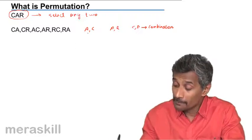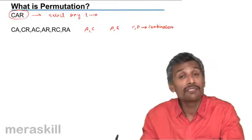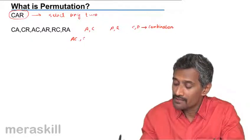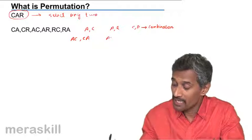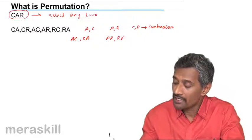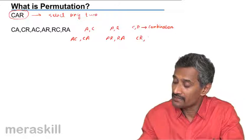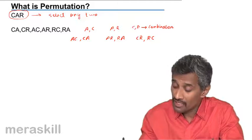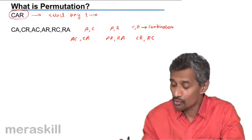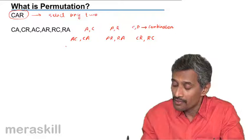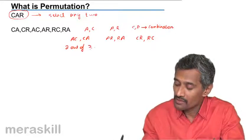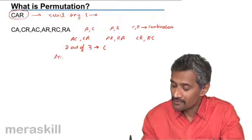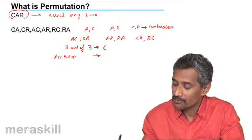Once selected, this is a combination — you have selected two letters out of these: A and C, A and R, C and R. Now, what are the ways in which you can arrange them? There are two ways of arranging each pair: A and C or C and A; A and R or R and A; C and R or R and C. So there are six ways to arrange the two letters you have chosen. Choosing two out of three is a combination.